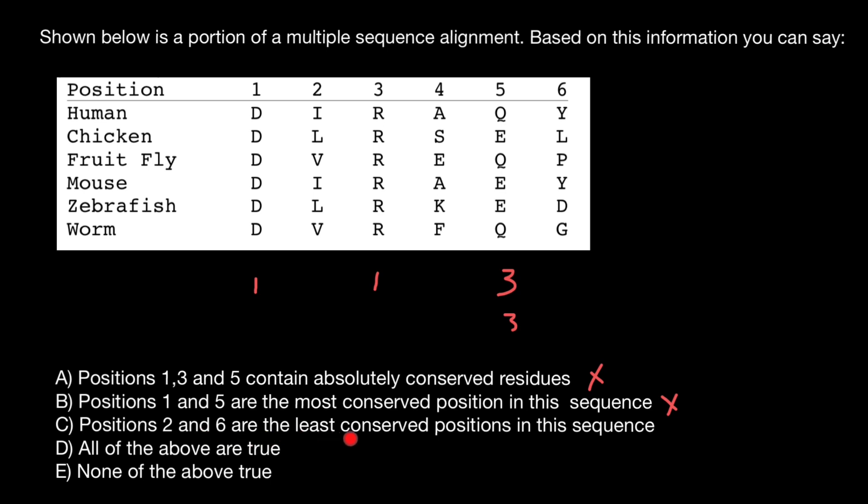Now let's check statement C. Positions two and six are the least conserved positions in this sequence. In some species we see leucine here, in two species actually, so let's put two. In other we see leucine, two species, so also two. And we also see valine in two species, so also two variants.